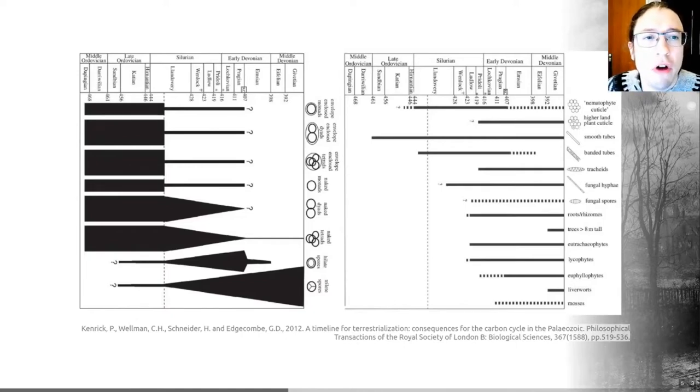As you can see from the graph on the right here we start seeing smooth tubes, the simplest form we may associate with a plant, appearing at about 461 million years ago in the fossil record. This reflects the fact that early fossils can be fragmentary and difficult to place in a modern tree of life.